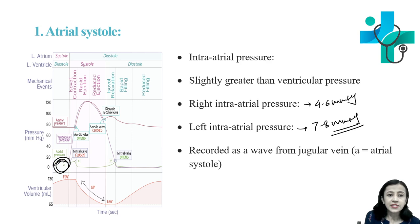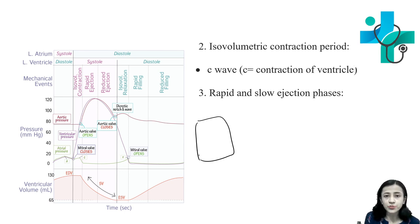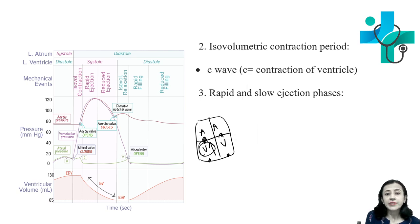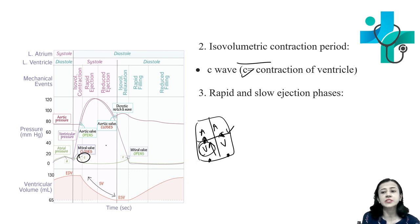With atrial relaxation in the later part, there is a decrease in pressure. Then comes isovolumetric contraction period. There is a sharp rise in intraventricular pressure. Because of this increase in intraventricular pressure — with both valves closed and ventricles contracting — there is bulging of the AV valve. Because of this bulging of the AV valve, there is an increase in intra-atrial pressure, and this gives you the C wave. During rapid and slow ejection phases, intra-atrial pressure decreases sharply as papillary muscles contract with ventricular contraction and pull down the AV valve.